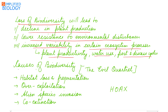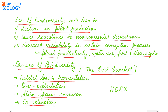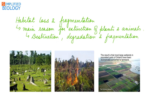The four major causes of biodiversity loss are referred to as the 'Evil Quartet,' remembered by the acronym HOAX: H for habitat loss and fragmentation, O for over-exploitation, A for alien species invasion, and X for co-extinction.